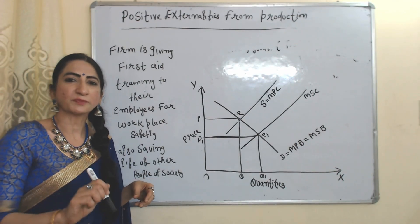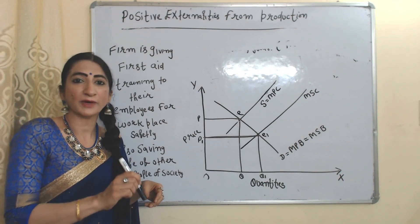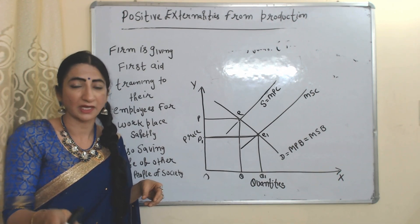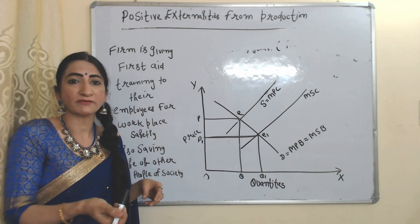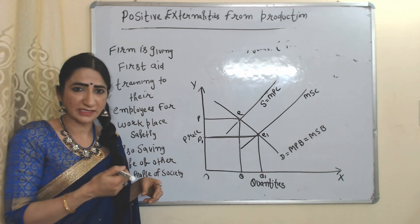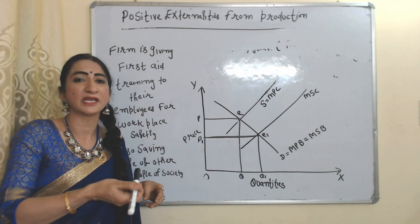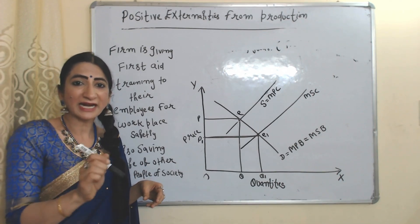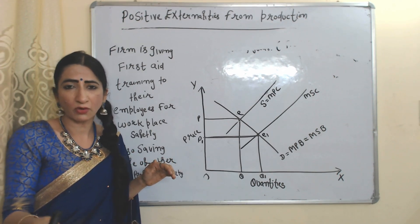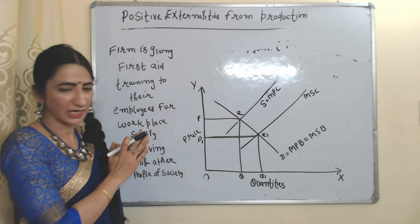Now we'll see positive externalities in production. Suppose there is one company giving first aid training to their employees for workplace safety, but this training also saves the lives of people who are not their employees. For example, if I received first aid training through my company but use this skill on my neighbors or my child, that means this training gives benefit to the whole society — it will be called positive externality.